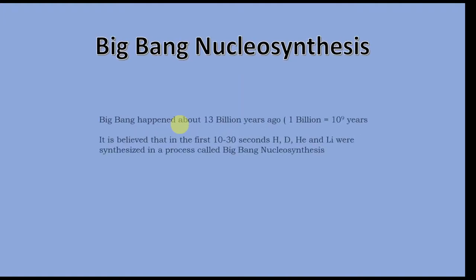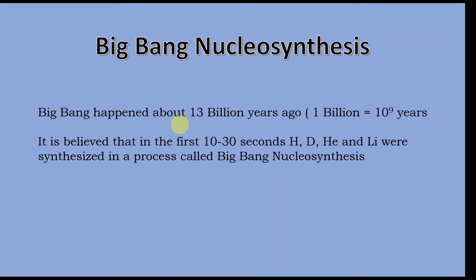The story of Stellar Evolution really starts with the Big Bang. The modern theory of the origin of the Universe, as all of you know, is the Big Bang Theory, which is supposed to have occurred about 13 to 13.5 billion years ago. It is now known and there is sufficient evidence that in the first 10 to 30 seconds, the primordial nuclei like hydrogen, deuterium — which is an isotope of hydrogen — helium nucleus and lithium were synthesized in a process called Big Bang Nucleosynthesis.